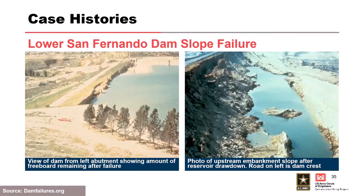Due to the seismic event, a zone on the upstream side of the dam liquefied and the majority of the upstream slope slid into the reservoir. Prior to the failure, the reservoir was approximately 35 feet below the crest; after the failure, only about five feet of freeboard remained. They were very lucky the reservoir was so low. They drained the reservoir as quickly as possible because there's a large population downstream and they were worried about continued failure. Essentially the entire upstream slope of the dam was gone.